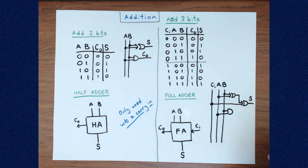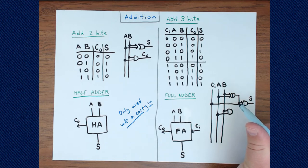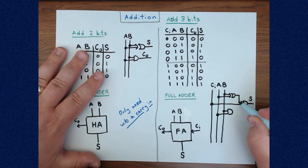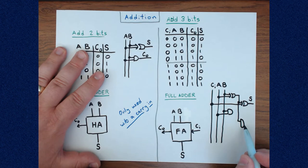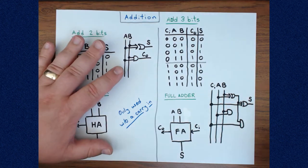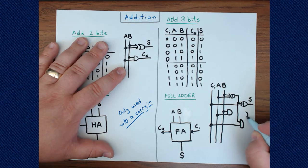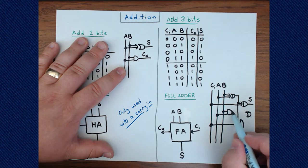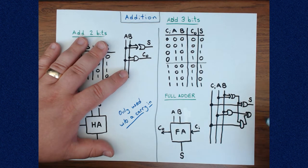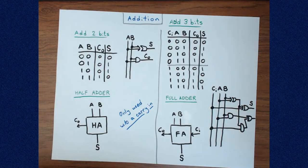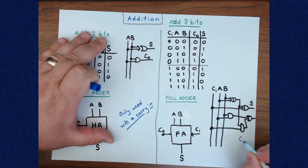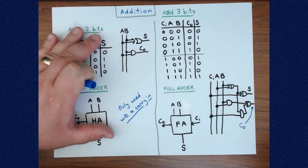We OR the output of the first AND gate — carry from A and B — with the output of the second AND gate — the sum of A and B being ANDed with the carry input. If either of those partial sums produces a one, we get a one as the carry out. And there we have a full adder circuit.